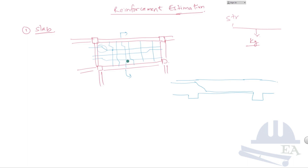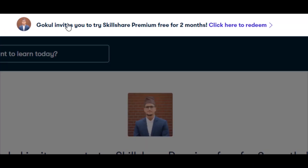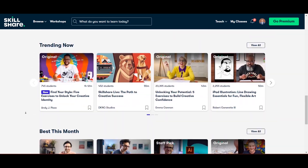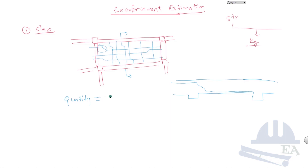The thumb rule says that in a slab, the quantity of reinforcement is equal to 80 kg per meter cube of concrete. This means that if the volume of concrete is one meter cube, the total quantity of reinforcement used is 80 kg. If it is 2 meter cube, then it will be 160 kg. If it is 2.5 meter cube, then it will be equal to 80 times 2.5. So whatever the value of the concrete volume, you simply multiply it by 80 to get the quantity of rebar in kg.